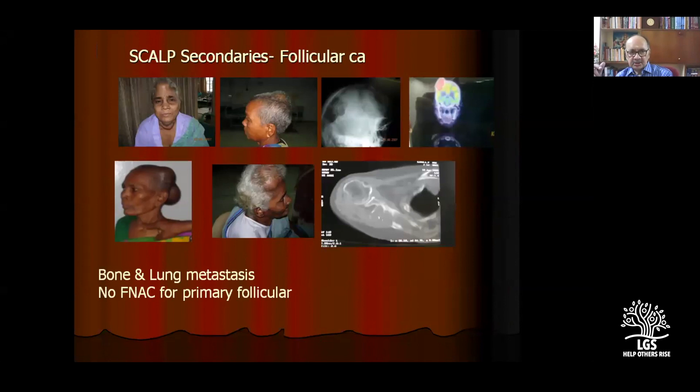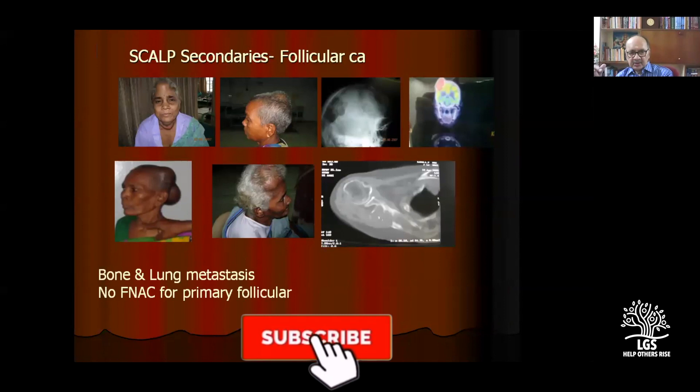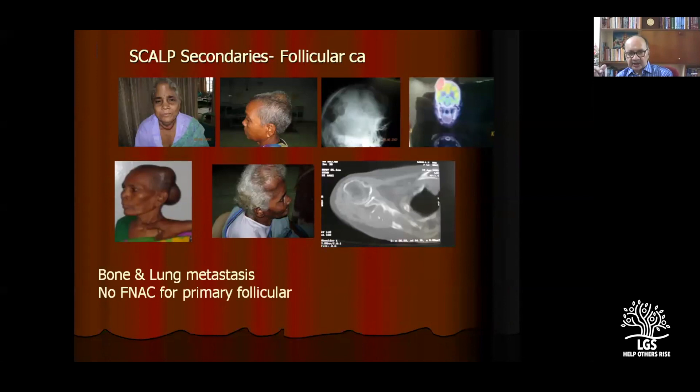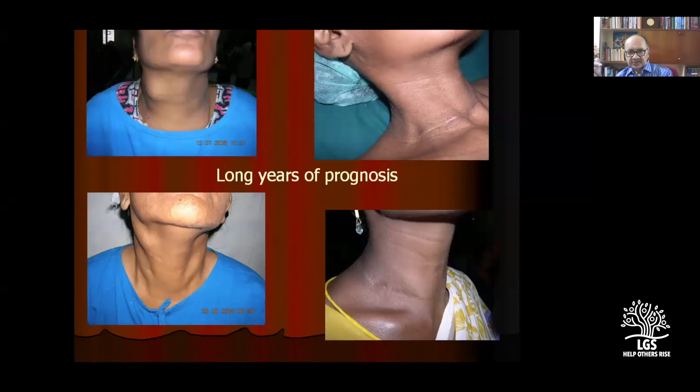Scalp secondaries are predominantly from follicular carcinomas. They also spread to lung and bone. FNAC is not useful for primary follicular diagnosis, but for diagnosing secondaries in the scalp it is useful. Compared to other types, follicular carcinomas, Hurthle cell, and papillary carcinomas all have longer years of prognosis.